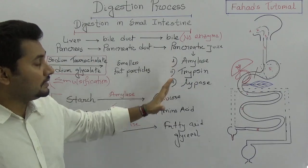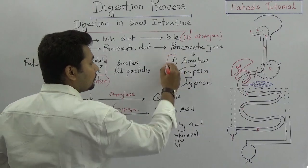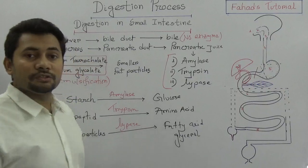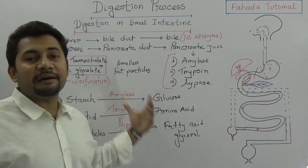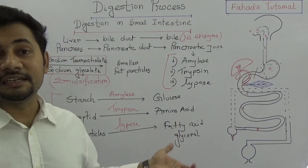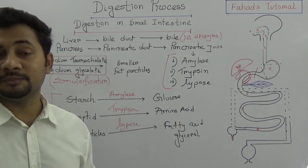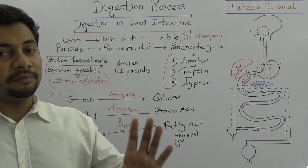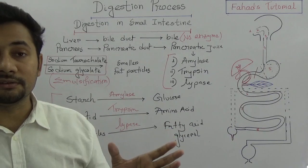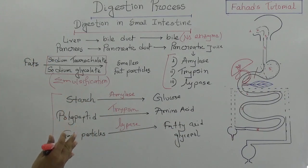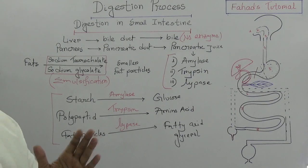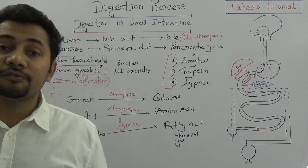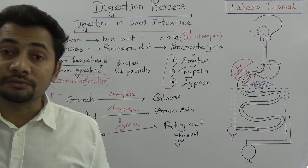So polypeptide turns into amino acids, starch turns into glucose — these are the three main enzymes you must know. There are many more enzymes I didn't discuss, but if you want to know more, please search on Google. In short, this is the description of the digestion process in the small intestine.